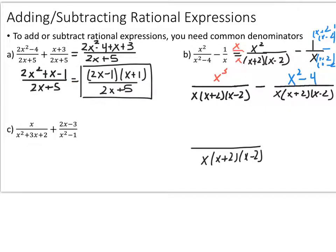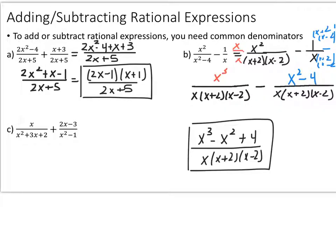If you combine like terms, you end up with x cubed minus x squared plus 4, all over x times x plus 2 times x minus 2. I checked these two factors with synthetic division and they don't divide into the numerator, so that's as simplified as you can go.